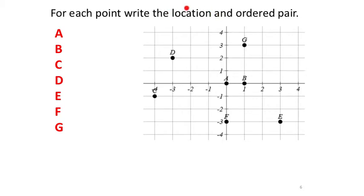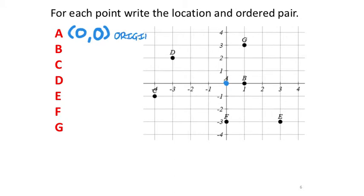The location means: is it on an axis, at the origin, or in a quadrant? Starting with point A — looking at the x number line, it's right in the middle, so it's zero. The y value is also zero. Zero, zero is what we call the origin, so point A is at the origin.